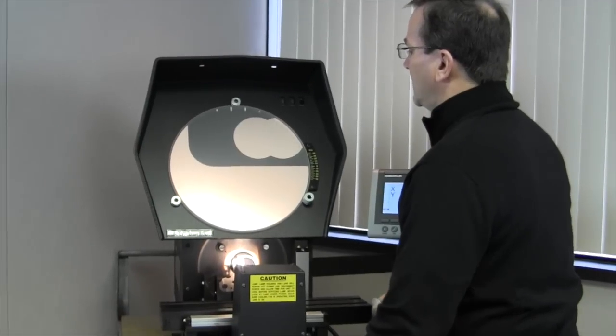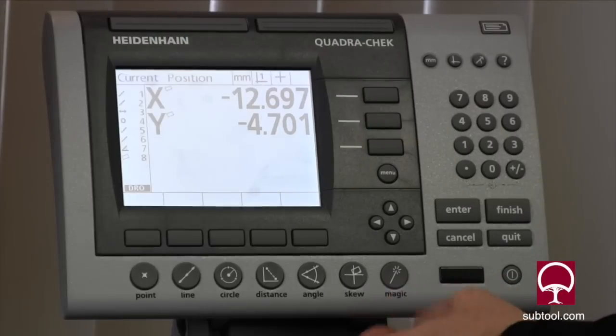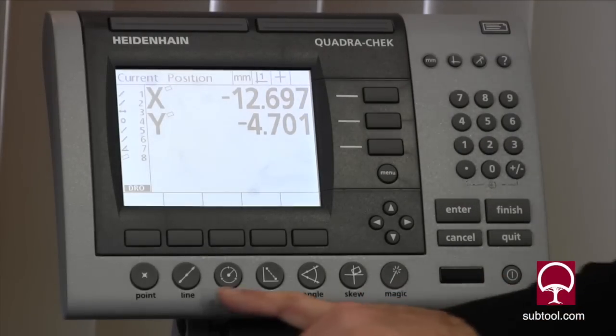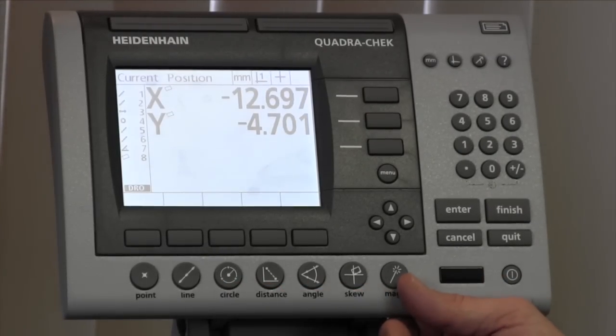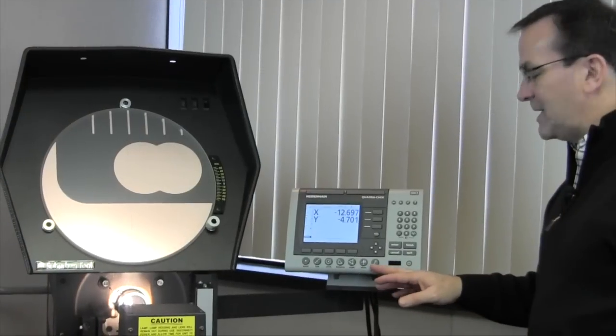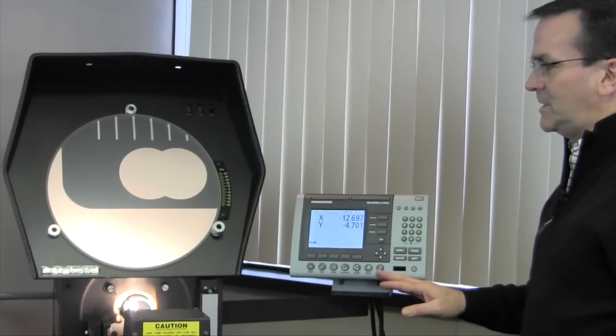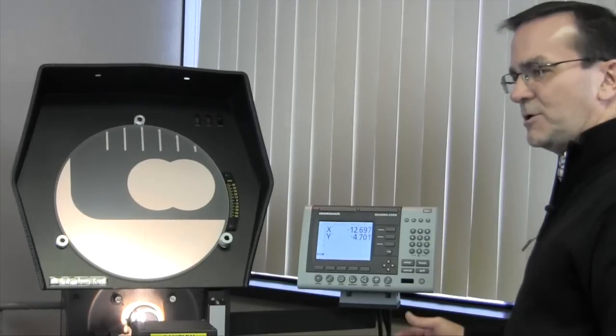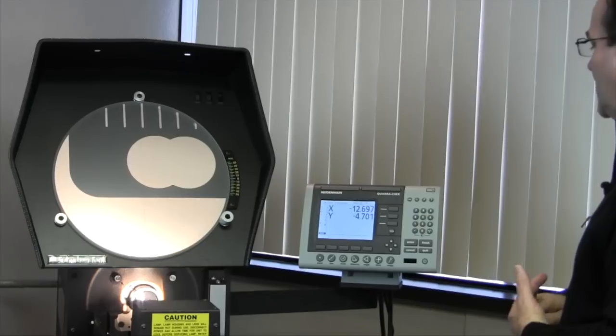Another little feature that this unit has here is called MAGIC. The MAGIC key, rather than having to select circle or angle or whatever, if you touch MAGIC and then you start to pick points, it'll automatically say, oh, they want to measure a circle. Oh, they want to measure an angle. So sometimes that, if you're going to take a lot of measurements that are all different kinds of features, sometimes that can be a really convenient little thing to have.